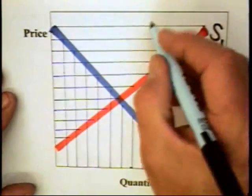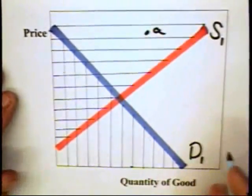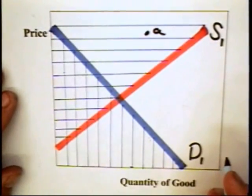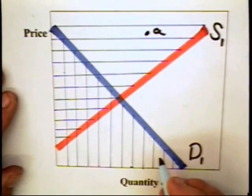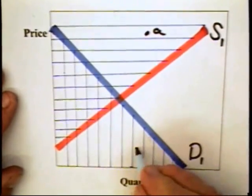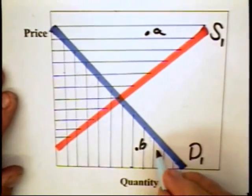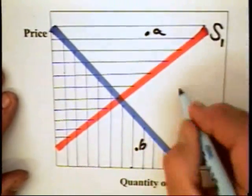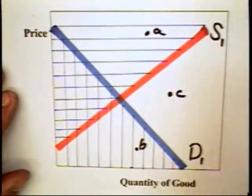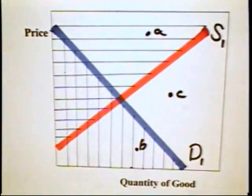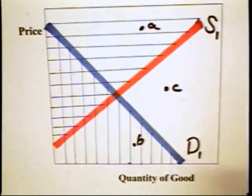Now, we know that combination A is acceptable to producers but not acceptable to consumers. We know that combination B is acceptable to consumers but unacceptable to producers. Combination C is unacceptable to both producers and consumers.